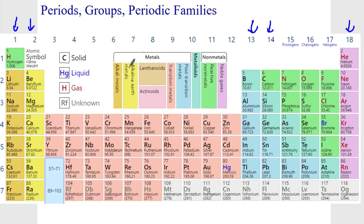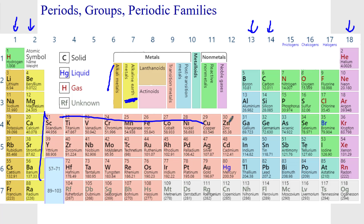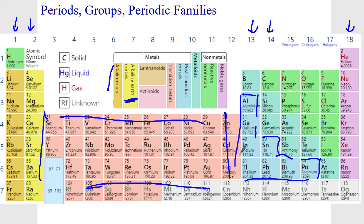Let's take a look at our periodic families. Group 1 is called the alkali metals. They all end in S1 for their electron configuration. Group 2 are the alkaline earth metals — those end in S2, whether it's 2S2, 3S2, or 4S2 — and they tend to lose two electrons. In the middle, we have the transition metals, which make a transition from the S orbital to the P orbital. We also have the post-transition metals, which come right after the transition metals.